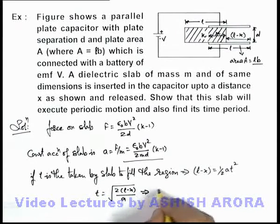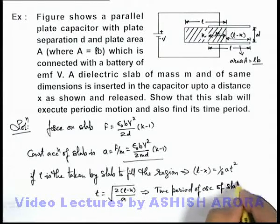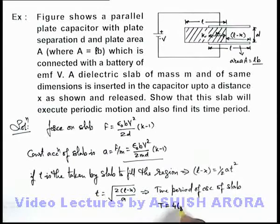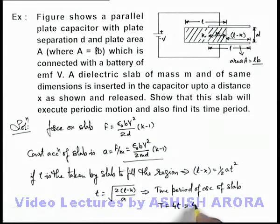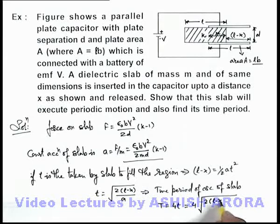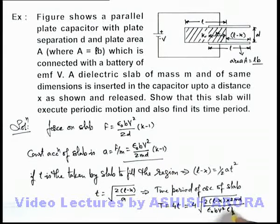So the value of time t is the square root of 2(l minus x) divided by the acceleration. This implies the time period of oscillations of the slab can be written as 4 times the time taken by the slab to fill the region between the plates, which gives T equals 4 times the square root of 2(l minus x) divided by acceleration. Here the value of acceleration is ε₀bv² divided by 2md, multiplied by (k minus 1).